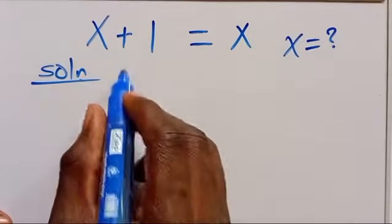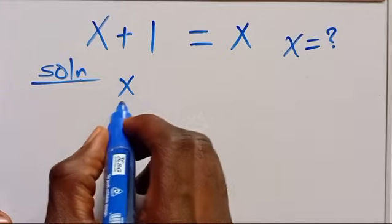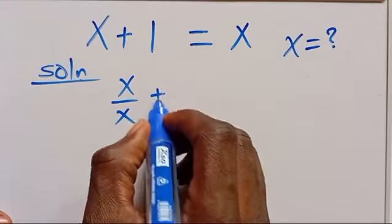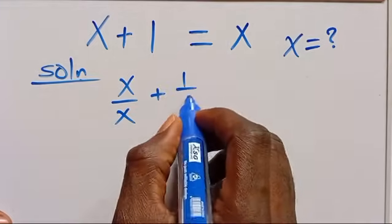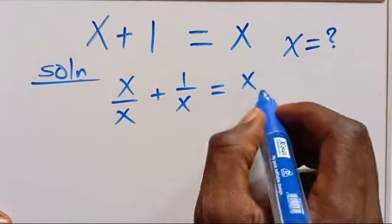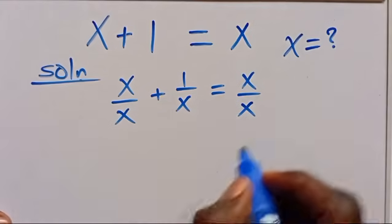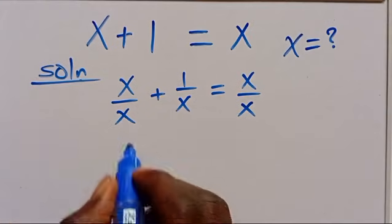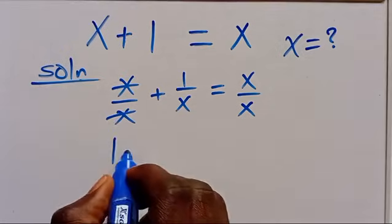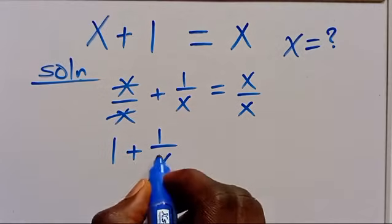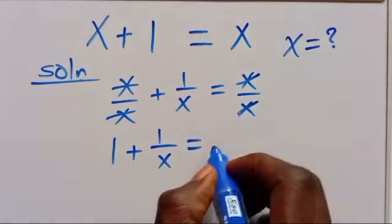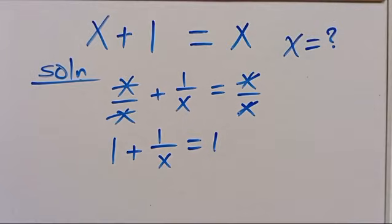Dividing both sides by x, we have x divided by x plus 1 divided by x equals x divided by x. We cancel terms, and we have 1 plus 1 divided by x. This also simplifies to give us 1.